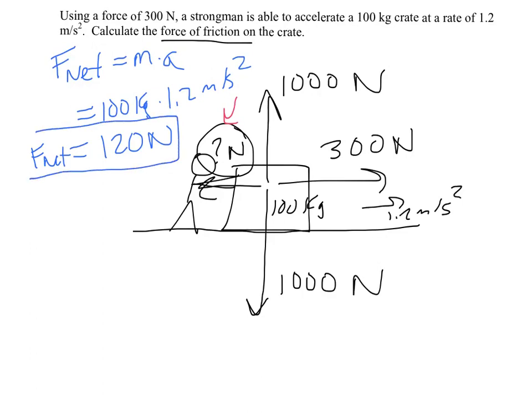So he is pushing with a force of 300 newtons. How much does the friction have to be to give us a net force of 120 newtons? In this case, you take the difference between those two and you would come up with 180 newtons. Because if there's 300 newtons to the right and 180 newtons to the left, that would give us a net force of 120.